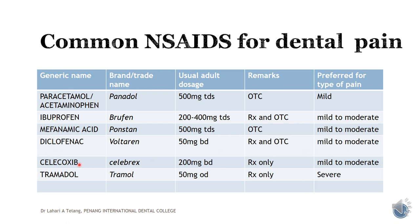The next one is Celecoxib, trade name Celebrex. This is different from the other NSAIDs because it is a COX-2 inhibitor. COX-2 inhibitors are preferred for cases where there is gastritis, as it does not cause gastritis — its mechanism of action acts on COX-2 instead of COX-1.